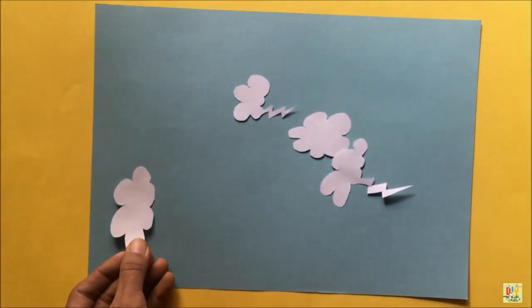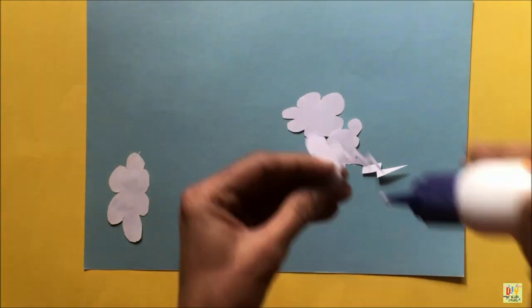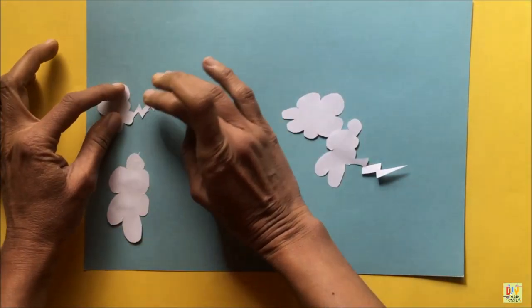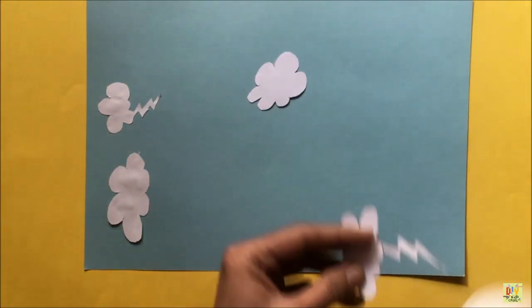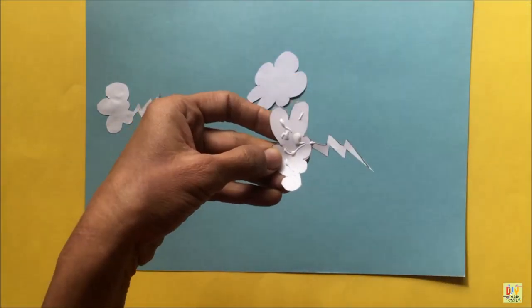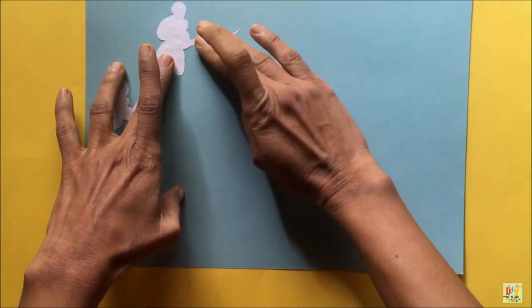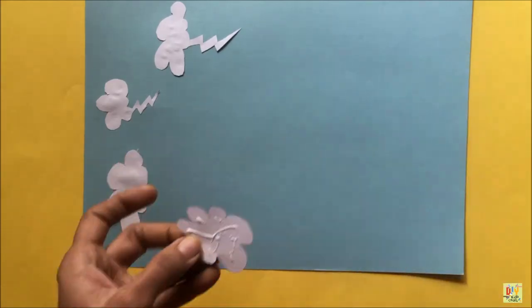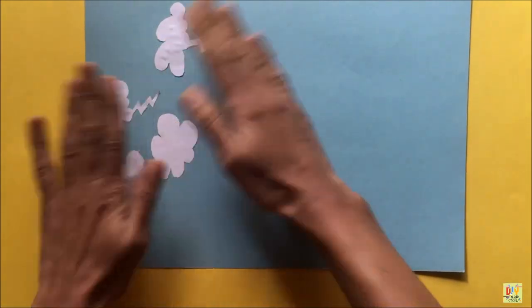And place it on our blue paper. Once we're done placing the clouds, we need to unfold the umbrella that we made and place it on the blue paper using a glue.